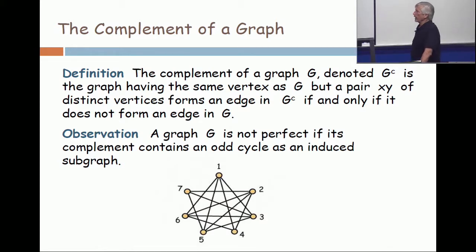So what I have below is the complement of an odd cycle. So if you take an odd cycle of size 7, you would originally have all the edges around the outside. So what I've done is take away those edges and put in all the edges through the interior. Is that clear what I've done?